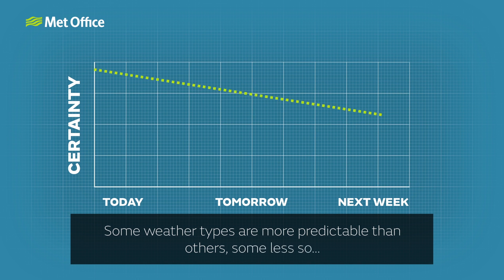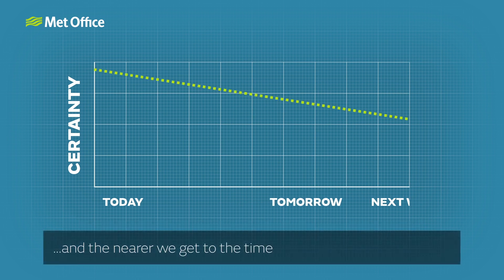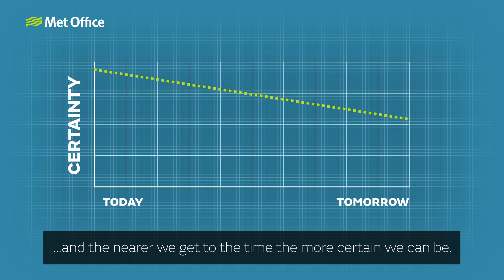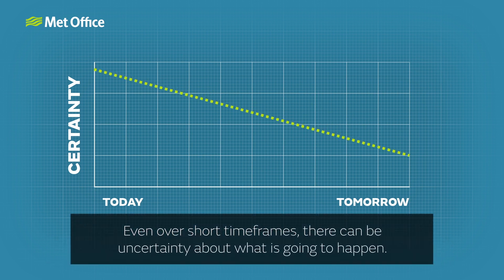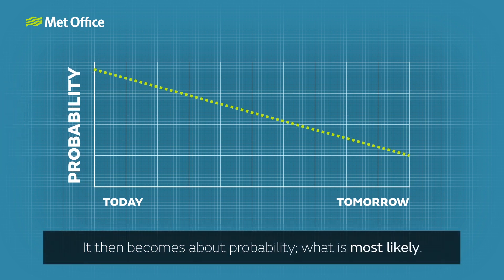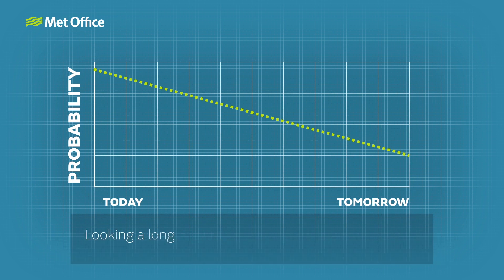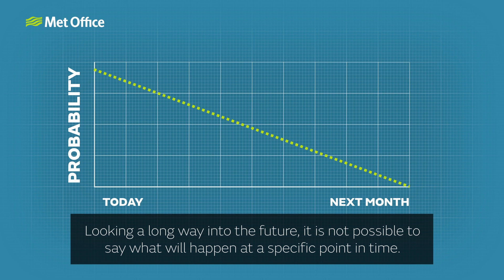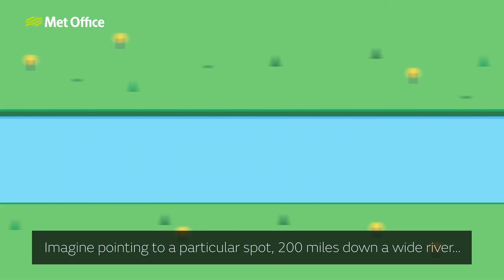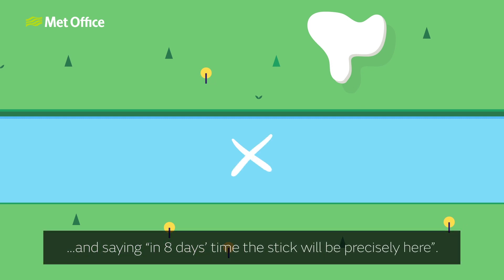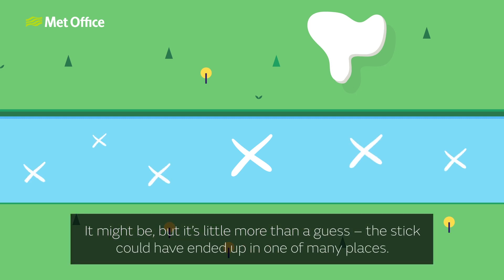Some weather types are more predictable than others, some less so. And the nearer we get to the time, the more certain we can be. Even over short time frames there can be uncertainty about what is going to happen — it then becomes about probability. What is most likely? Looking a long way into the future, it is not possible to say what will happen at a specific point in time. Imagine pointing to a particular spot 200 miles down a wide river and saying, in eight days' time the stick will be precisely here. It might be, but it is little more than a guess.